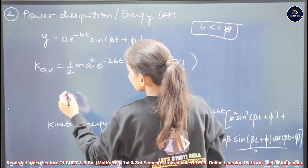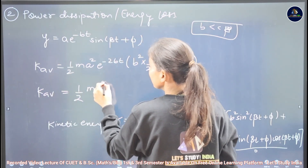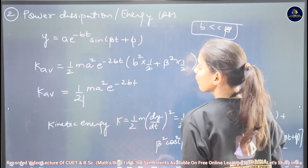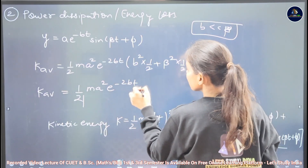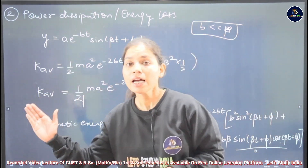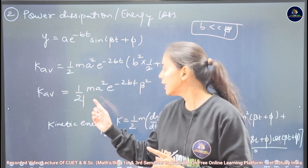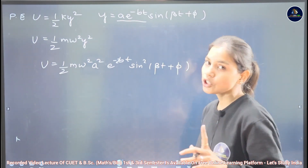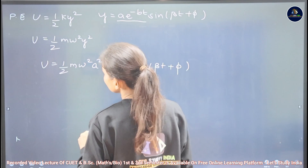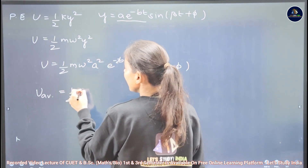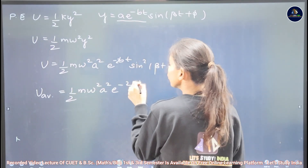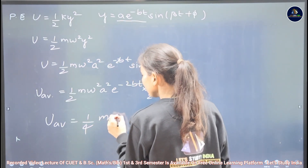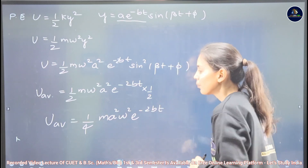The average kinetic energy becomes: ⟨K⟩ = ½m·A²·e^(-2bt)·[b²·(½) + β²·(½)] ≈ ½m·A²·e^(-2bt)·β²·(½) = ¼m·A²·β²·e^(-2bt). The average potential energy is: ⟨U⟩ = ½mω²·A²·e^(-2bt)·⟨sin²(βt+φ)⟩ = ½mω²·A²·e^(-2bt)·(½) = ¼m·A²·ω²·e^(-2bt).